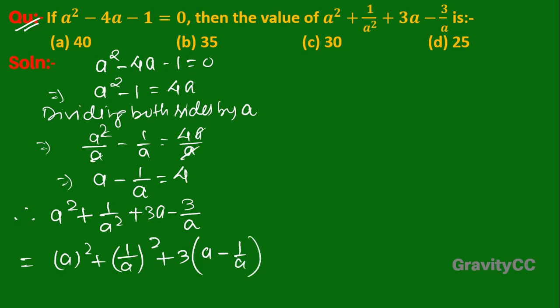Using the identity, this equals (a - 1/a)² + 2·a·(1/a) + 3(a - 1/a).